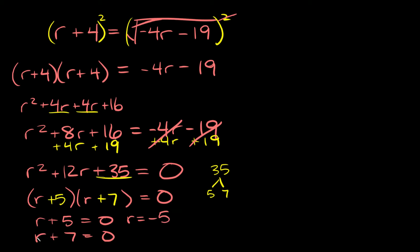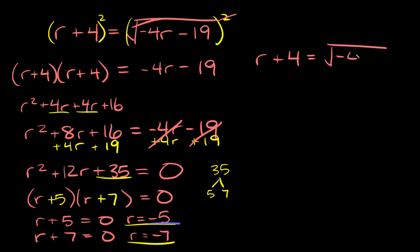And r plus 7 equals zero gives r is equal to negative 7. So our two answers are r is equal to negative 5 and r is equal to negative 7. But the last thing we have to do is check our answers. Let's check r is equal to negative 5. The original equation was r plus 4 is equal to the square root of negative 4r minus 19.